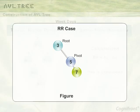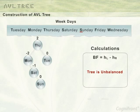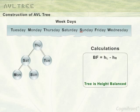Here, 3 is the root node and 5 is the pivot. In RR rotation, the pivot becomes the root node. So in the example, Monday is made the left child of Saturday and Saturday becomes the root. Now the tree is balanced.